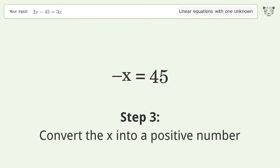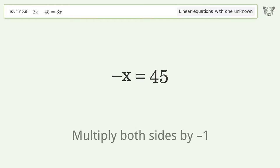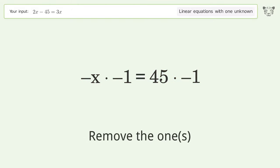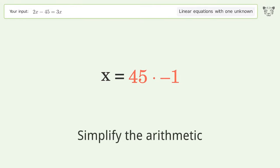Convert the x into a positive number. Multiply both sides by negative one. Remove the ones. Simplify the arithmetic.